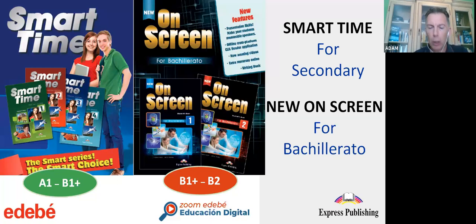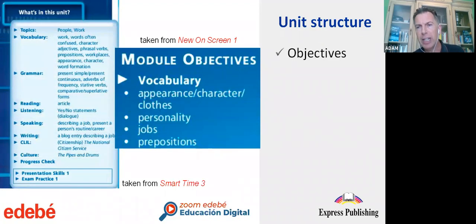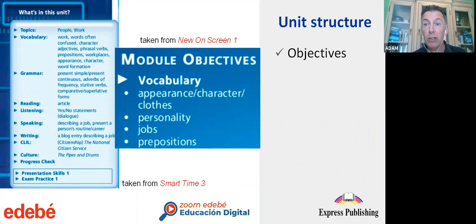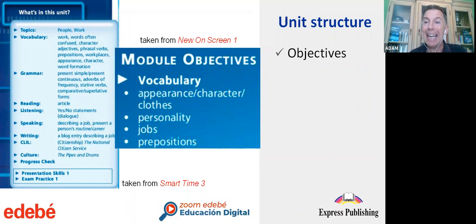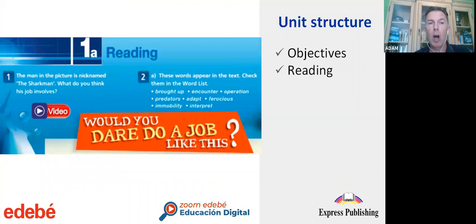Now let's take a closer look at how the units themselves are organized. This is particularly useful for teachers interested in a clear structure. First, we're talking about objectives — as teachers we must never overlook the importance of transmitting what we are going to be studying in the units, so that students can follow where we are going and track their own progress. We kick off with reading — section 1A in the unit structure is reading, often introducing a large piece of text, such as 'Would you dare do a job like swimming with sharks?'